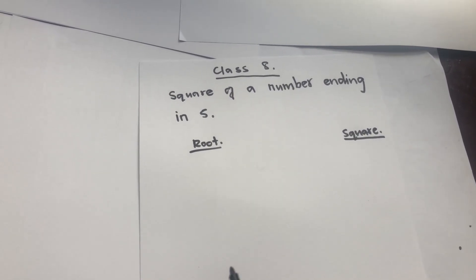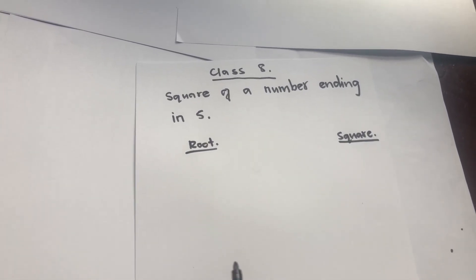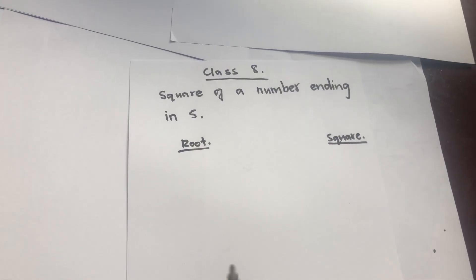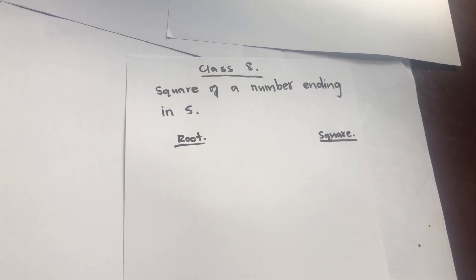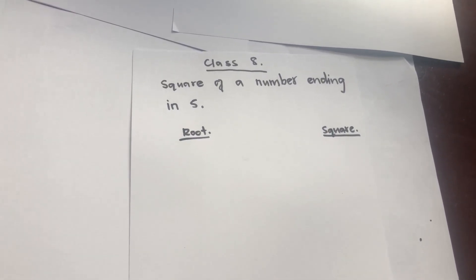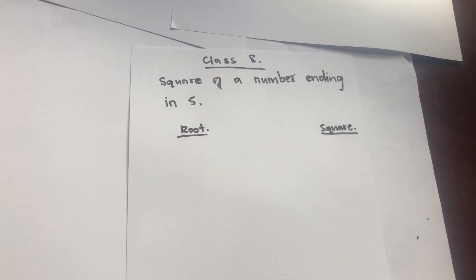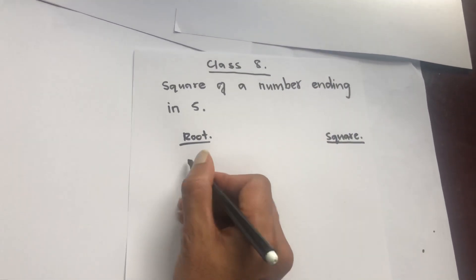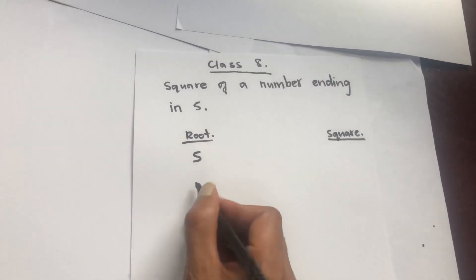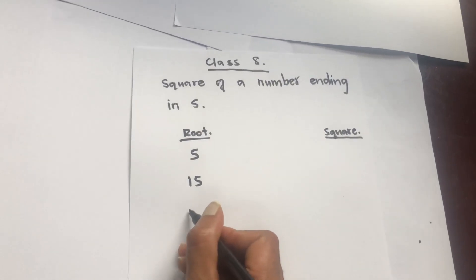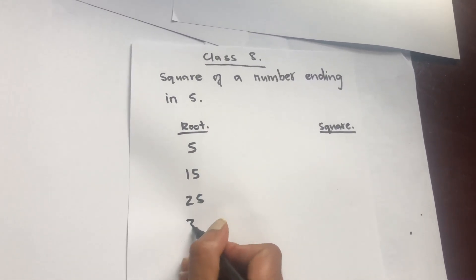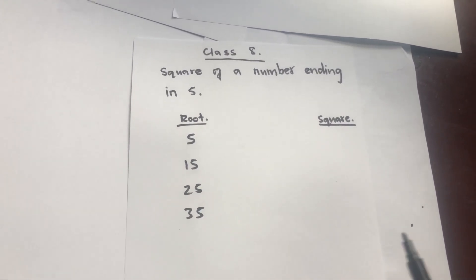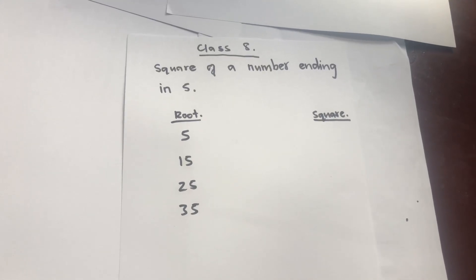I am going to tell you about the problem in class 8, which is to find the square of a number ending in 5. The numbers ending with 5 include 5, 15, 25, 35, and so on. If you want to find the square of any such number, you will learn the method in this video.